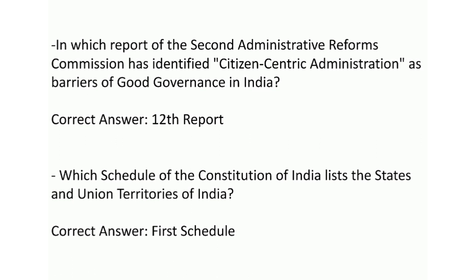In which report of the Second Administrative Reforms Commission has identified citizen-centric administration as a barrier of good governance in India? Correct answer is the 12th report. Which schedule of the Constitution of India lists the states and union territories of India? Correct answer is the 1st schedule.